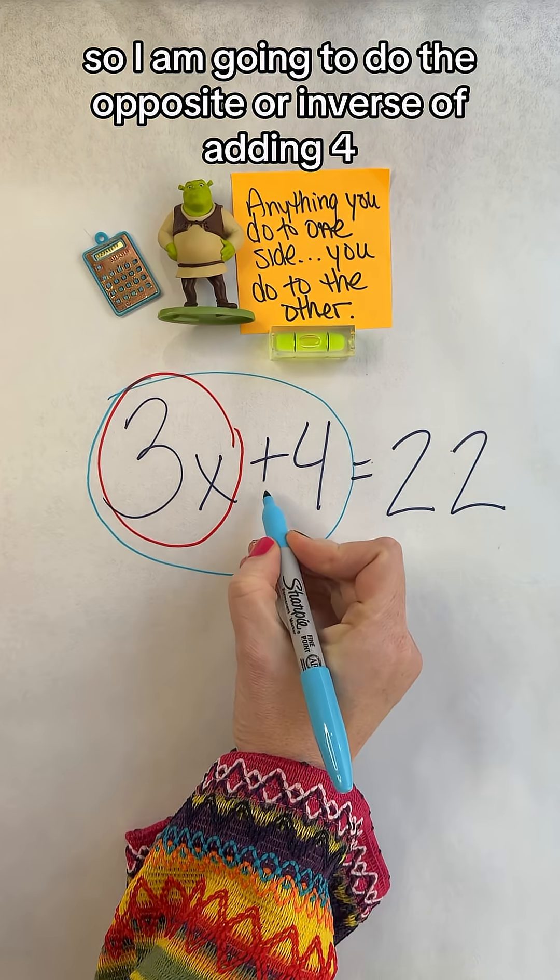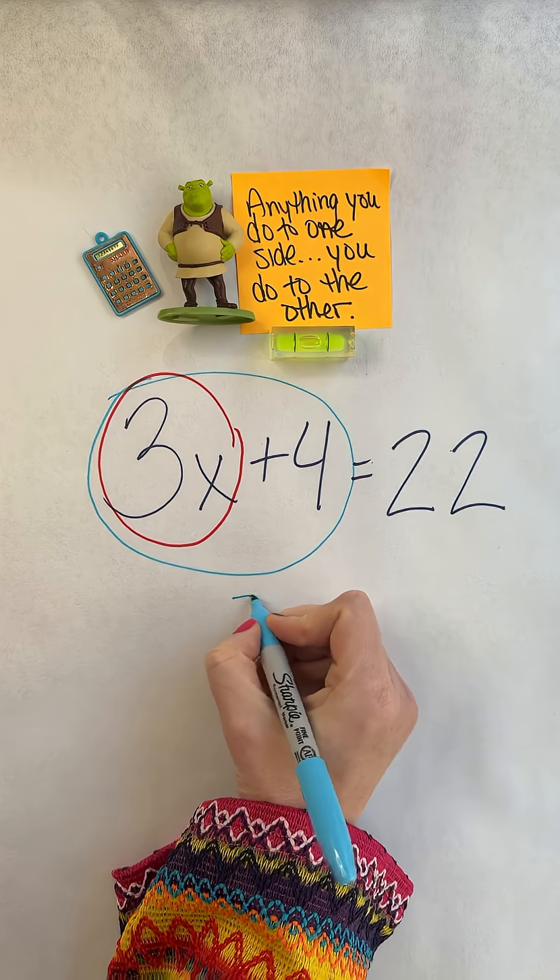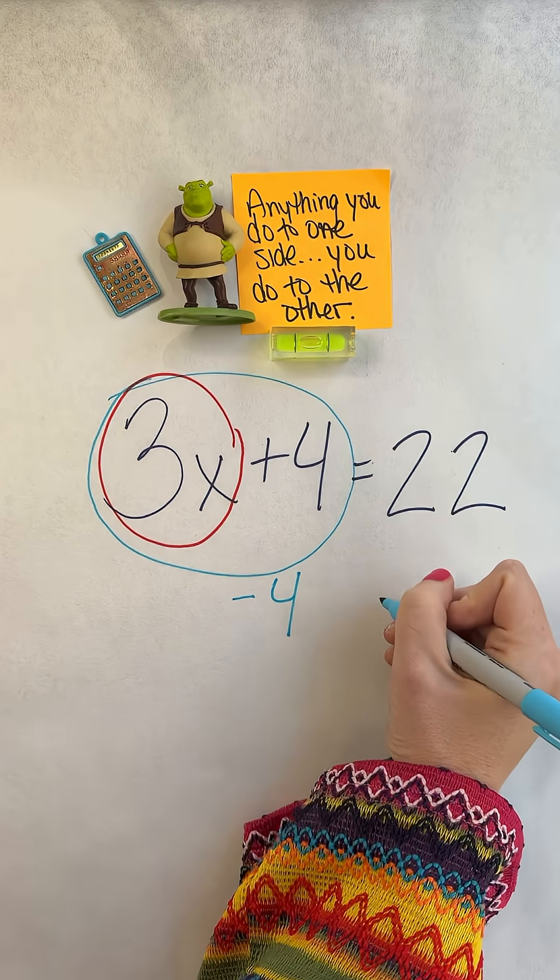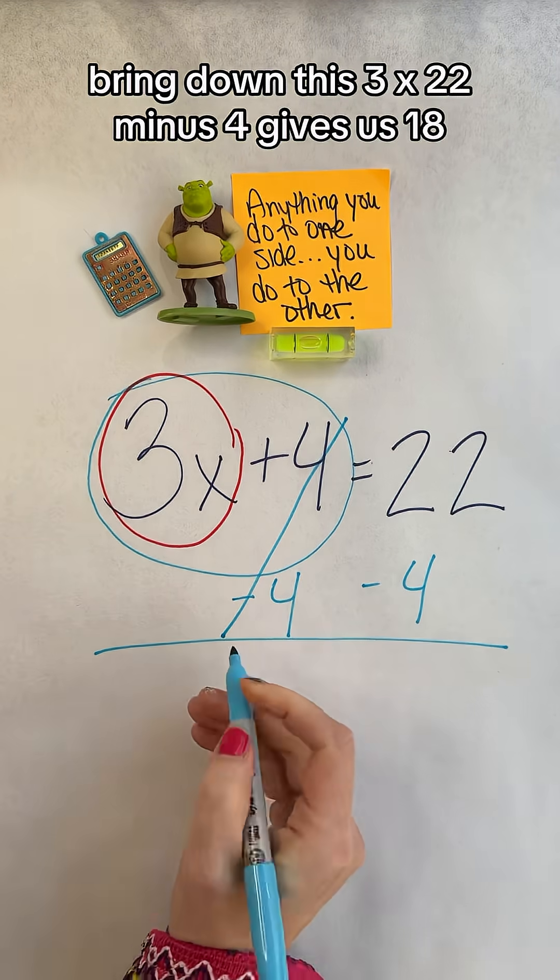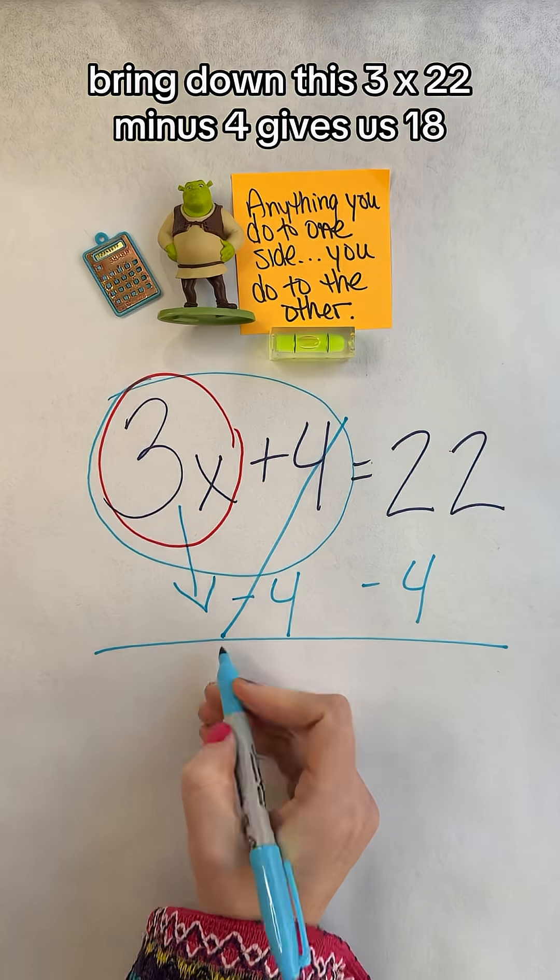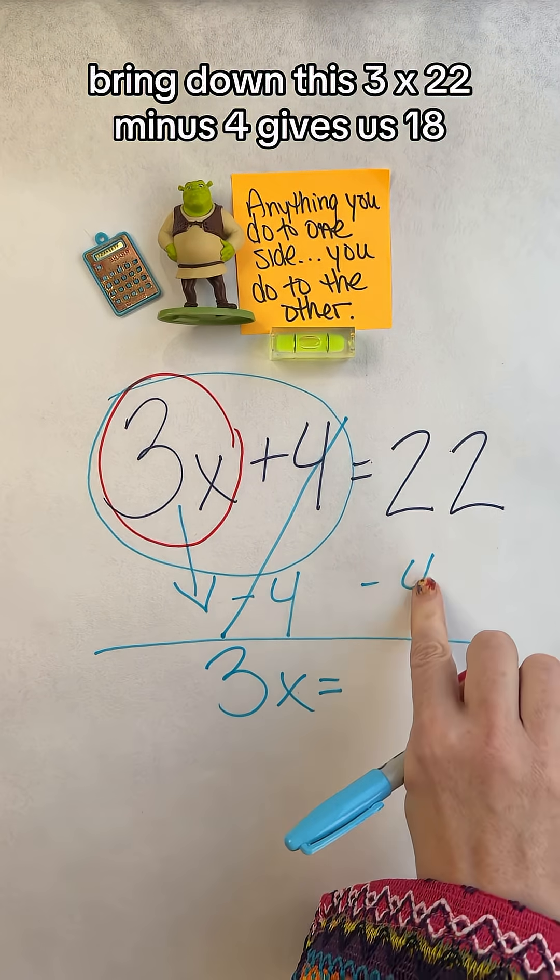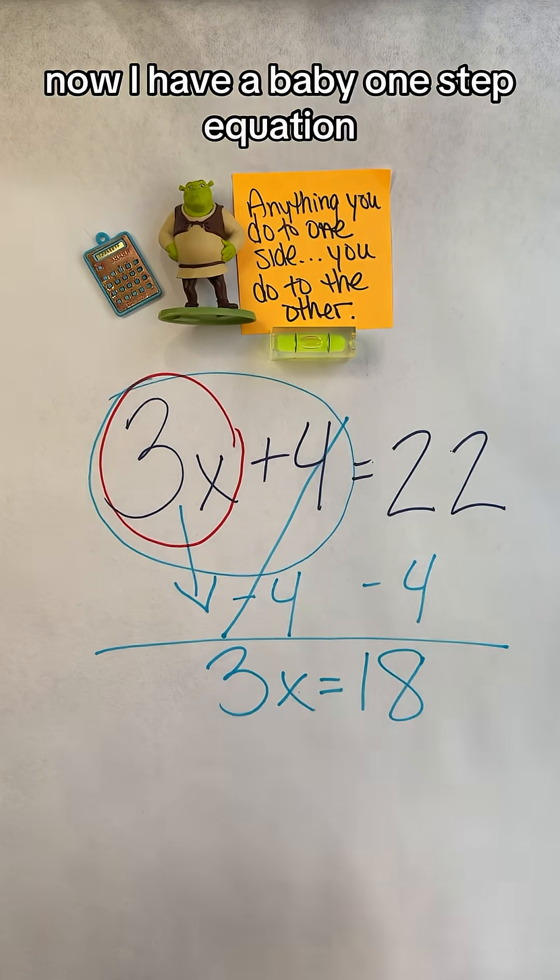So I am going to do the opposite or inverse of adding 4, which we know is subtract 4. Anything you do to one side, you do to the other. Plus 4, minus 4, cancel out. Always my favorite part. Bring down this 3x. 22 minus 4 gives us 18.